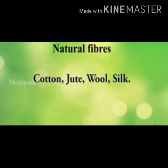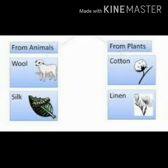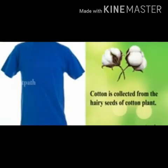Among these, cotton and jute are from plants, while wool and silk are obtained from animals. Cotton is obtained from the hairy seeds of the cotton plant. From this we can get the cotton fiber.